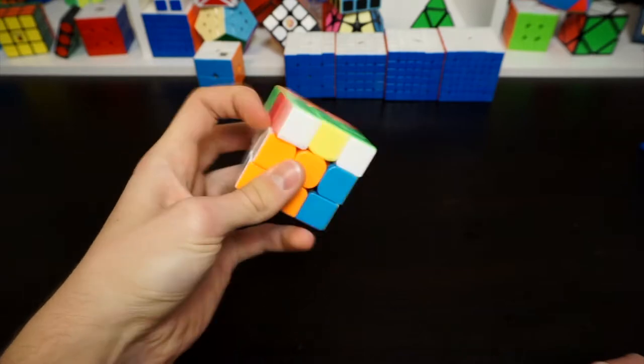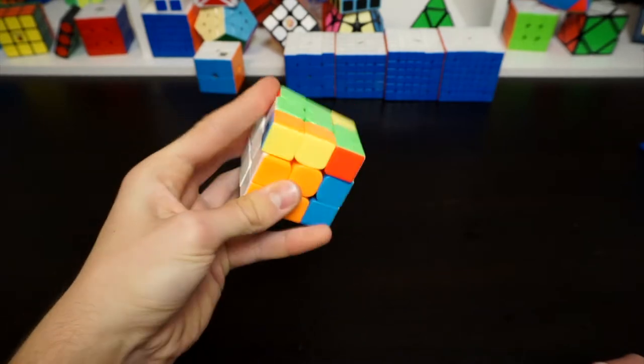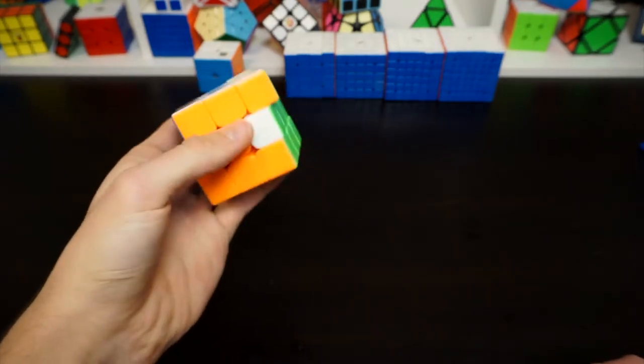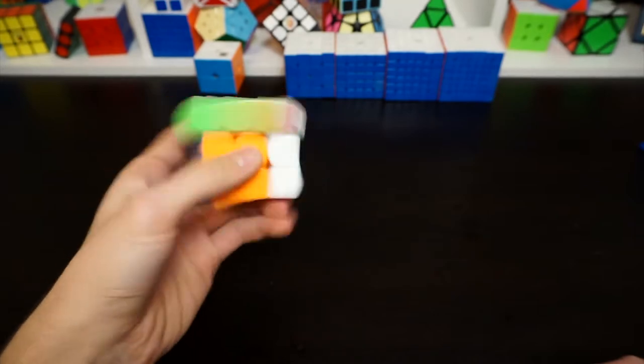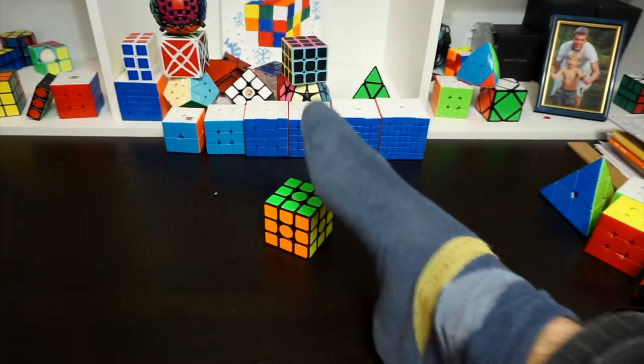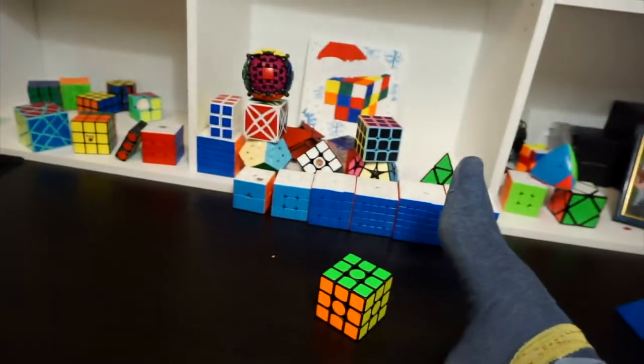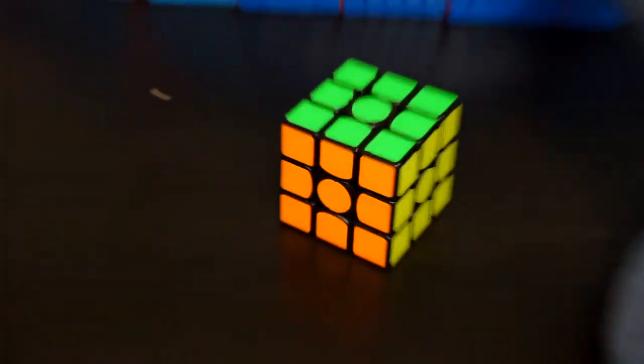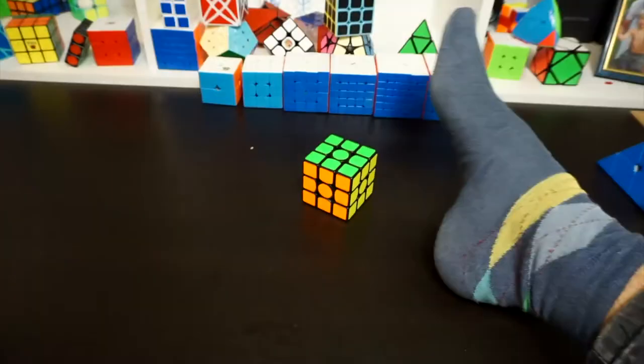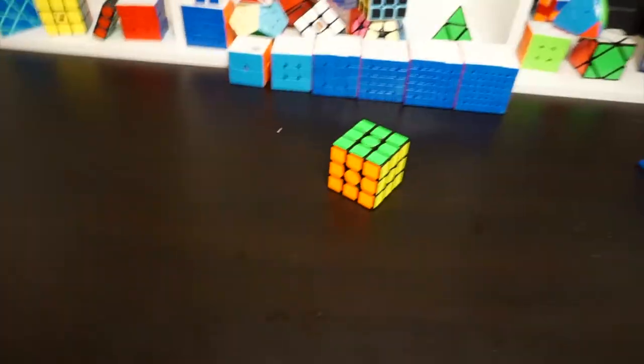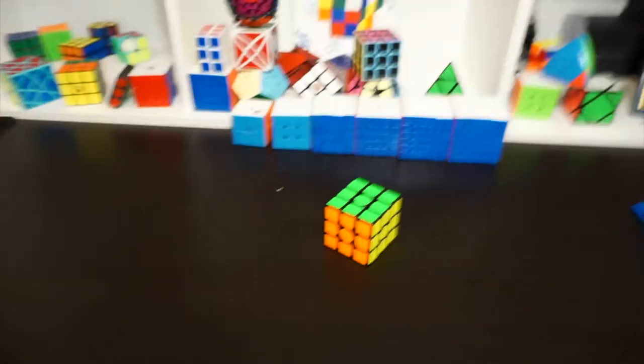Next up is one-handed. My goal is to get a sub 20 average finally. Oh my god. Okay so with feet I'll be using the GAN Air SM because that cube is really good for feet. I won't lie. It's really good. With feet my goal is to get a sub 2 average.